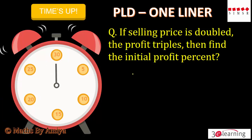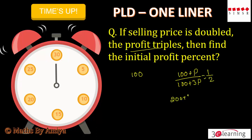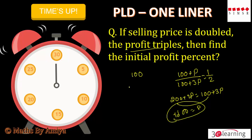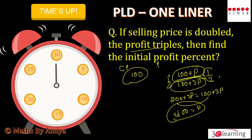Time up. Cost price is 100, selling price is 100 plus P. Profit triples, so new profit is 3P and new selling price is 100 plus 3P. Selling price doubled means the ratio is 1 to 2. So: 200 plus 2P equals 100 plus 3P. Cross multiplying: this gives 100 equals P. So P is nothing but 100%. Just write the selling price in terms of 100 and P, set up the ratio, and get the answer.